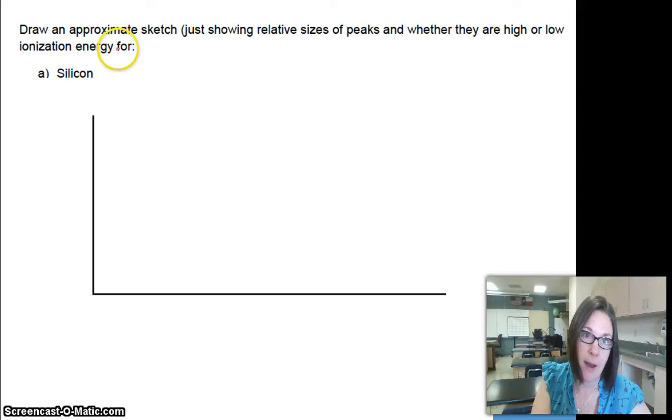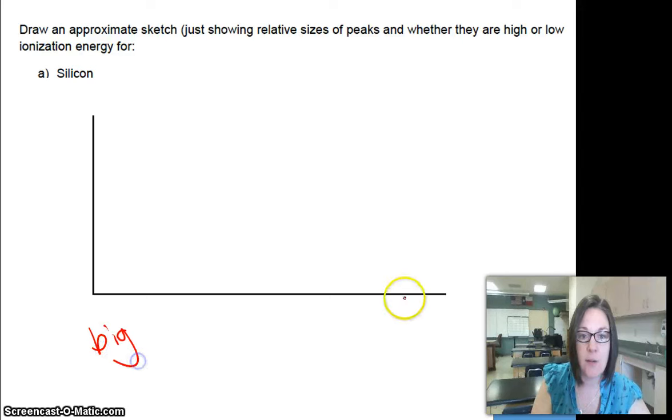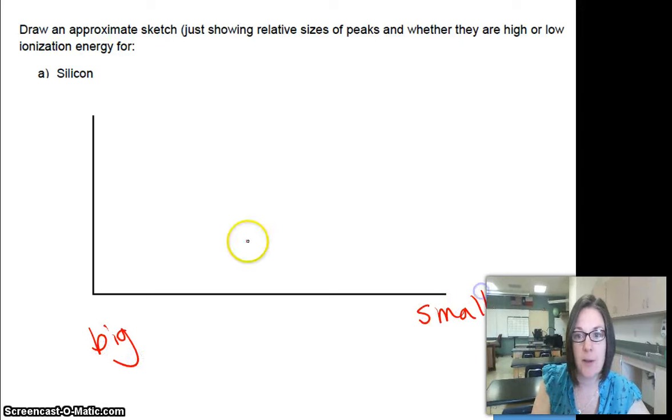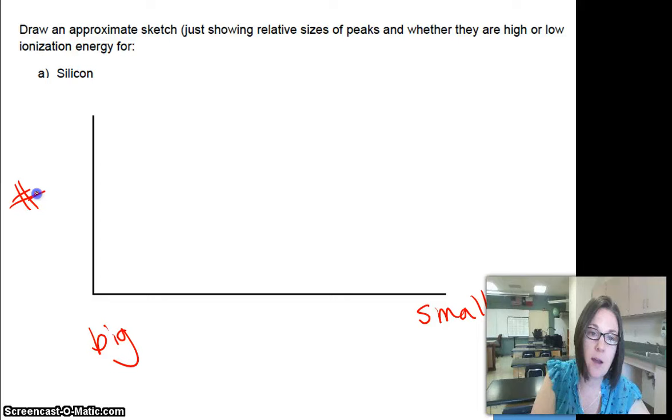So you could estimate what PES data would look like for an element, just by knowing that this is going to be the big amount of energy, this is going to be the small amount of energy, and this is going to be the number of electrons.